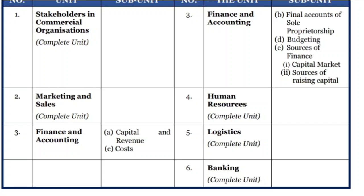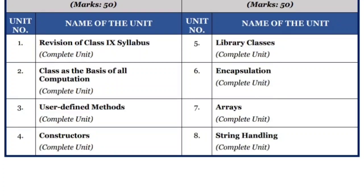For Commercial Studies, Semester 1 covers: stakeholders in commercial organizations complete unit, marketing and sales complete unit, and from finance and accounting - capital and revenue and costs. In Semester 2: from finance and accounting - final accounts of sole proprietorship, budgeting, sources of finance, capital market and sources of raising capital. Also human resources, logistics, and banking - three units asked in the March and April exams.